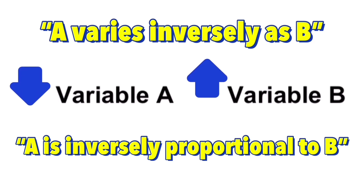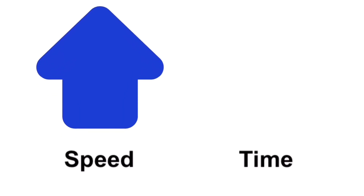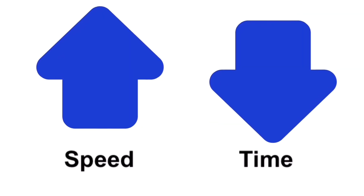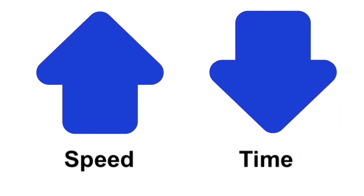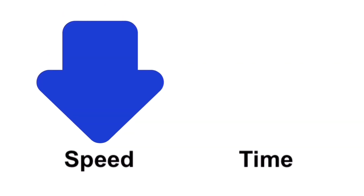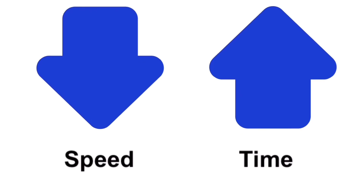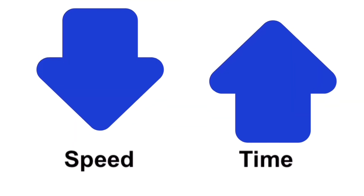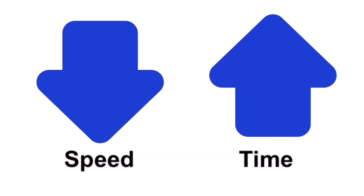Now let's look at some real-life examples of inverse variation. Speed and time are inversely proportional to each other, which means that if a car moves at a faster speed, then it takes less time to get to the same destination. That makes speed and time inversely proportional to each other.